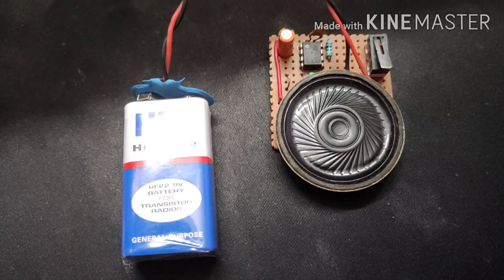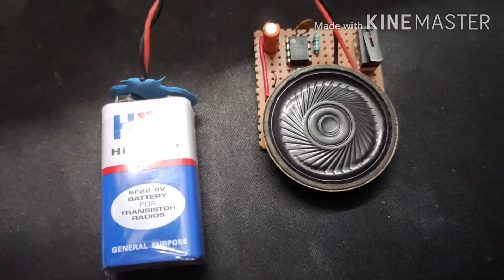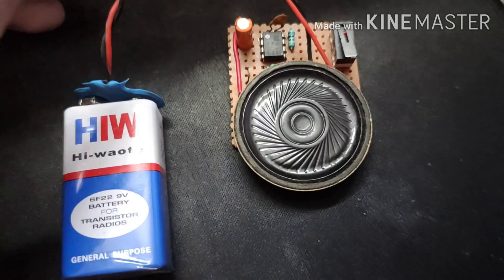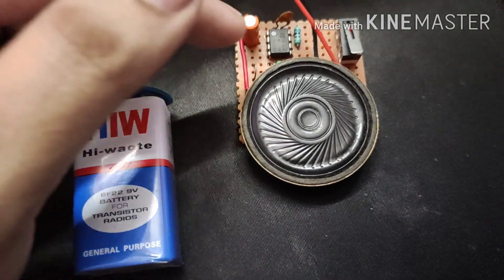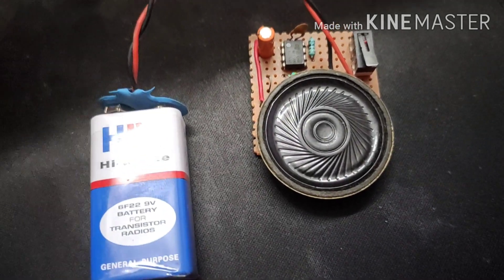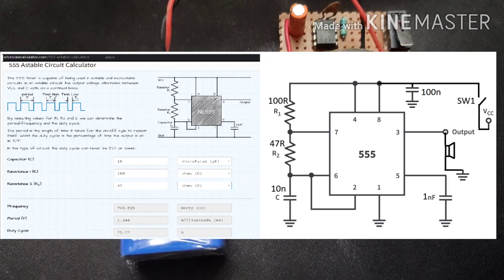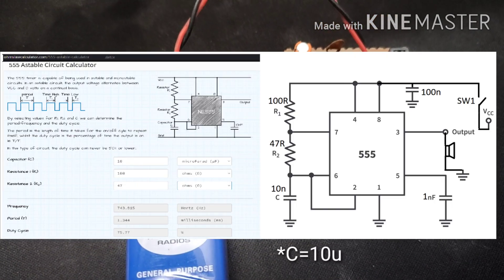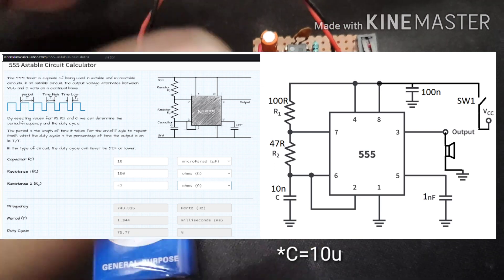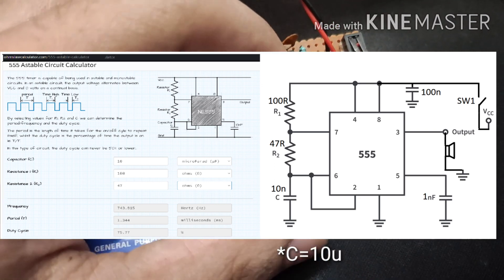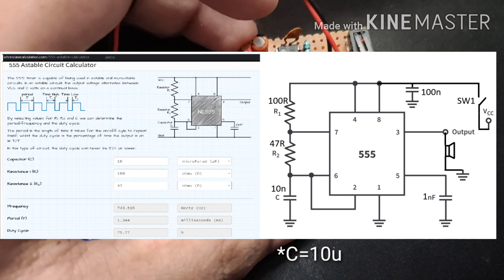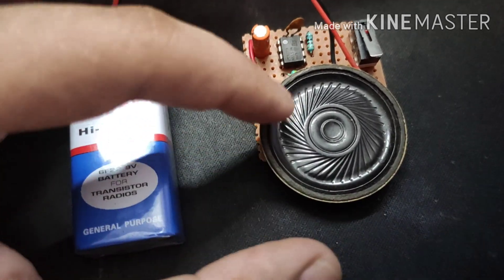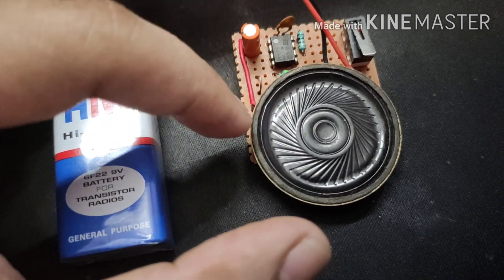Today I will be showing you a fun project — a Morse code generator. This has been implemented using the 555 timer in astable mode, which is an extremely popular configuration. Specific RC values have been used to achieve the desired output frequency, and the speaker is being driven directly from pin 3 of the IC.